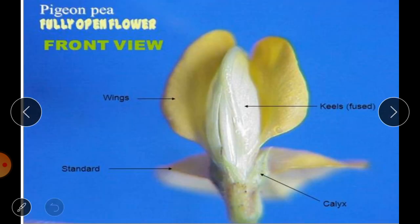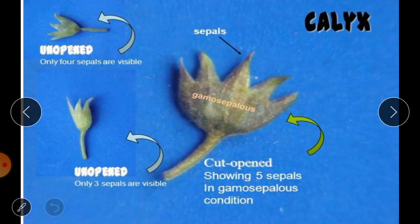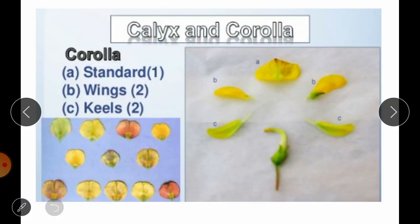Here you can see a view of the pigeon pea flower. The calyx forms a tube surrounding the other parts. The largest petal present on the outermost side is called the standard. Inside the standard are two petals called wings, and inside those wings are two fused petals called the keel. The calyx shows only three or four sepals when unopened, but if you cut it open you can see there are five sepals in gamosepalous — fused — condition.